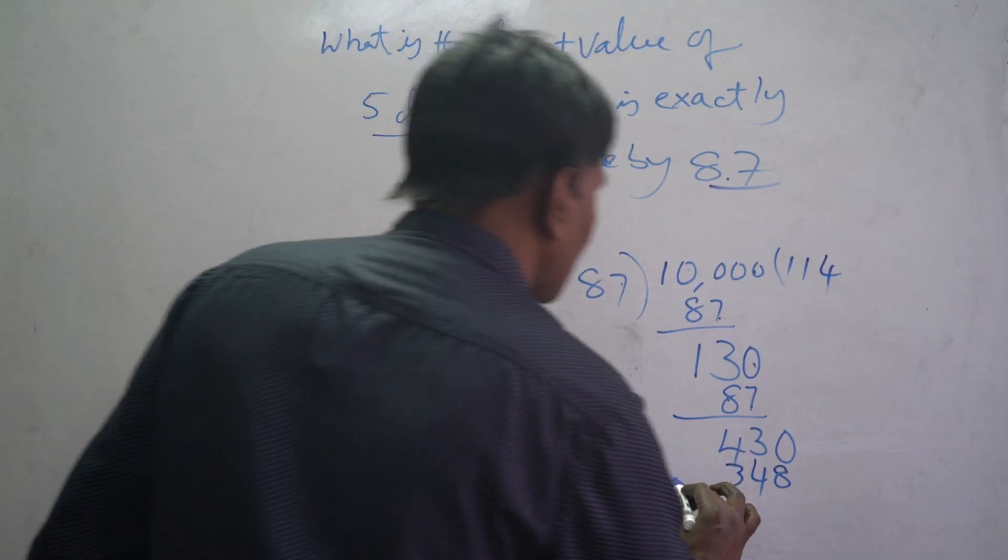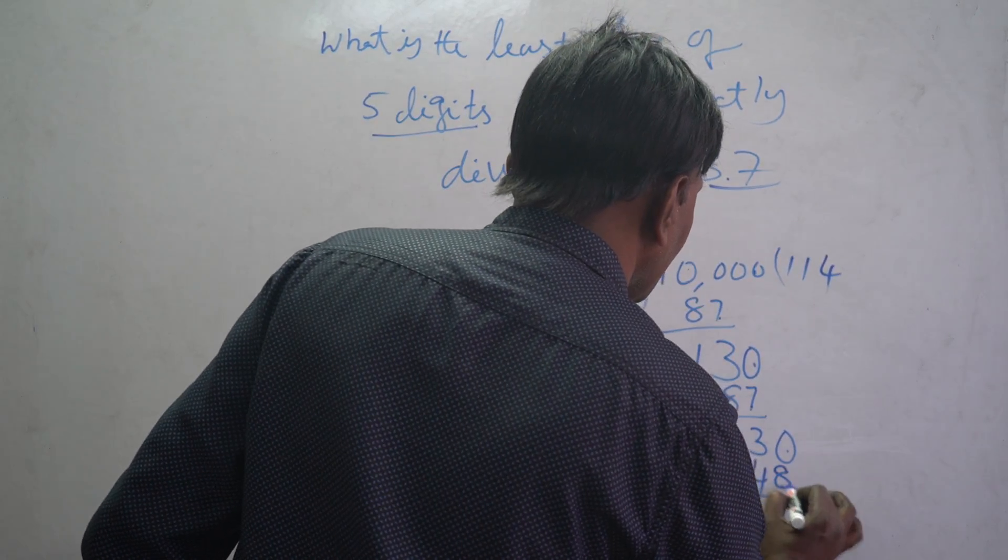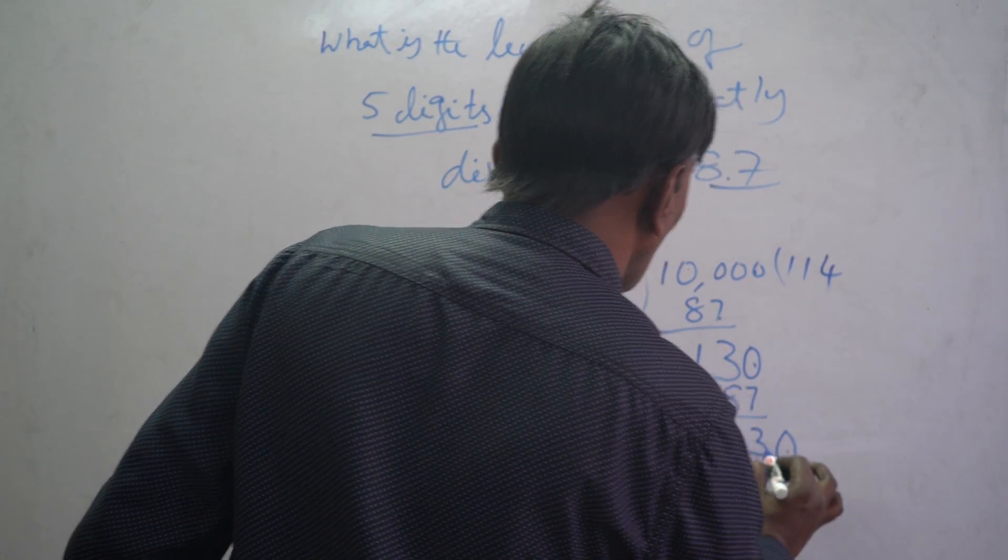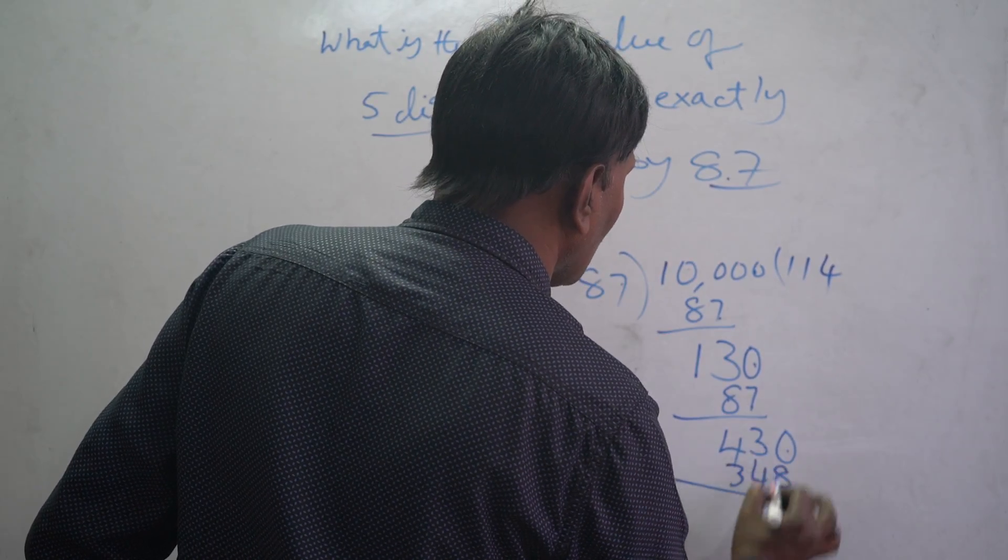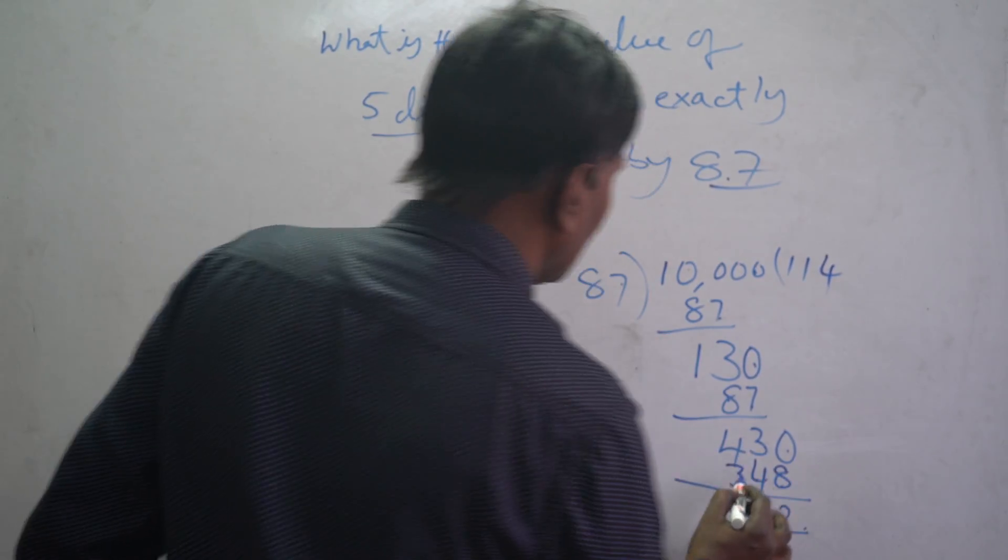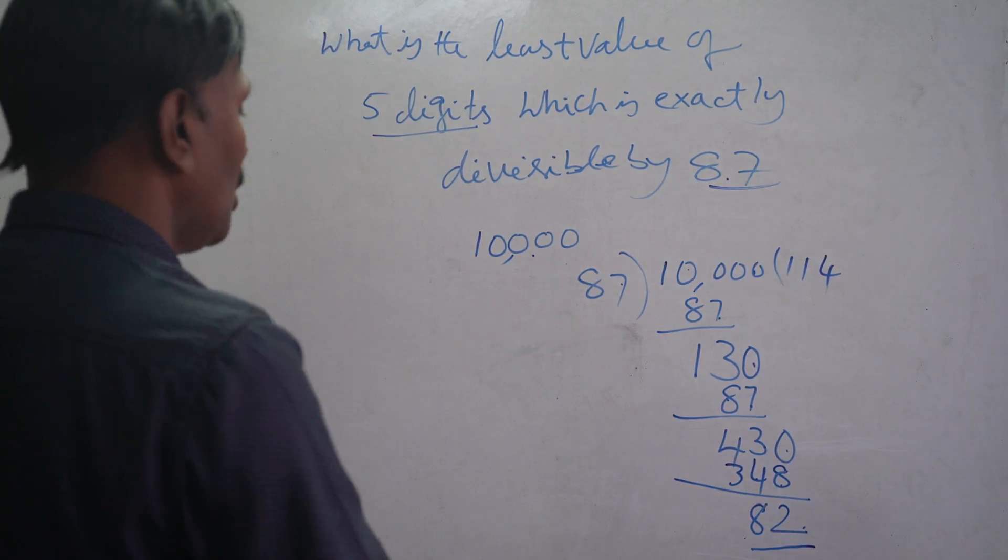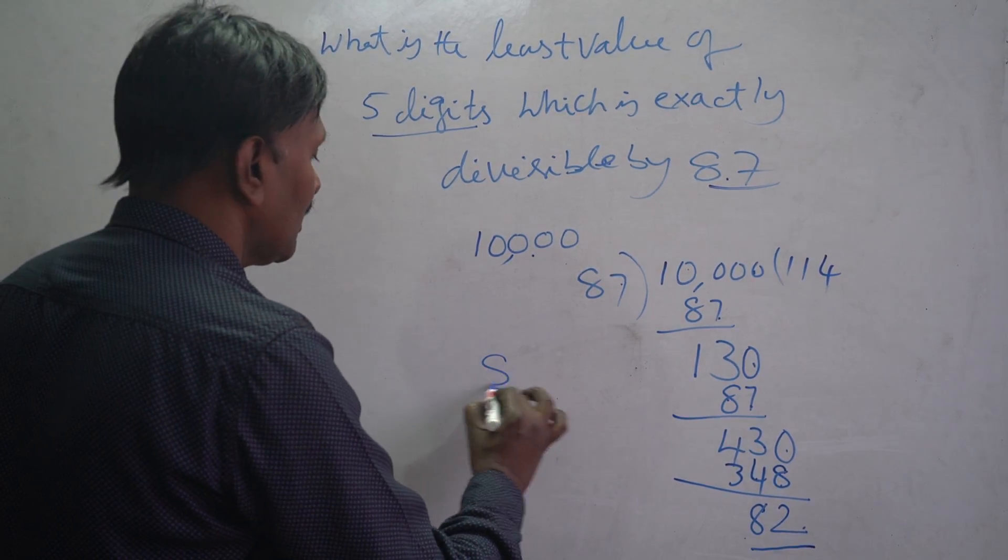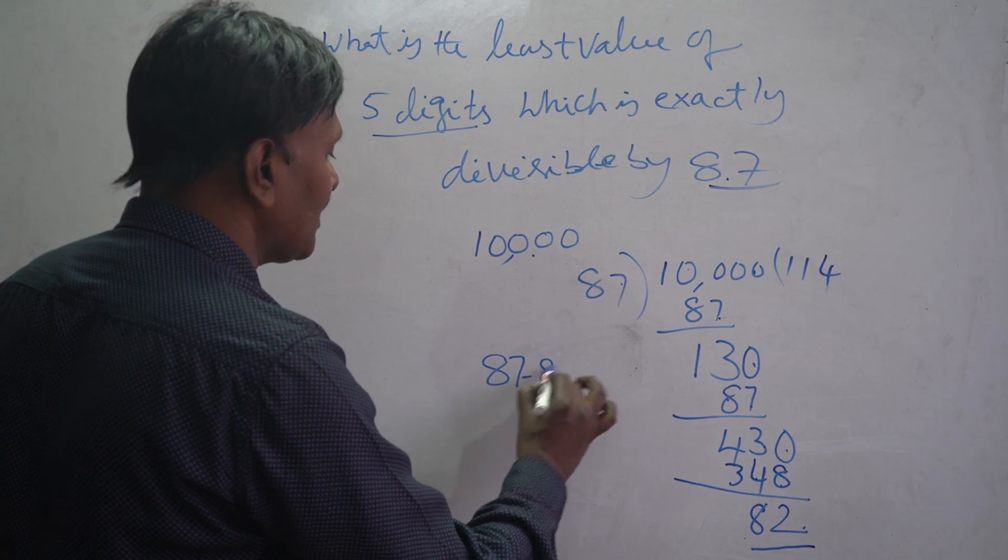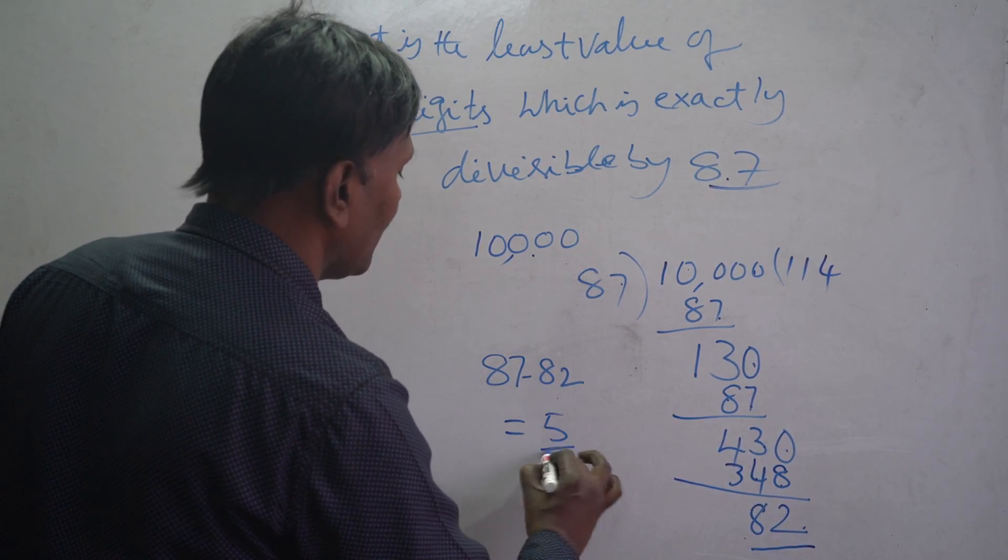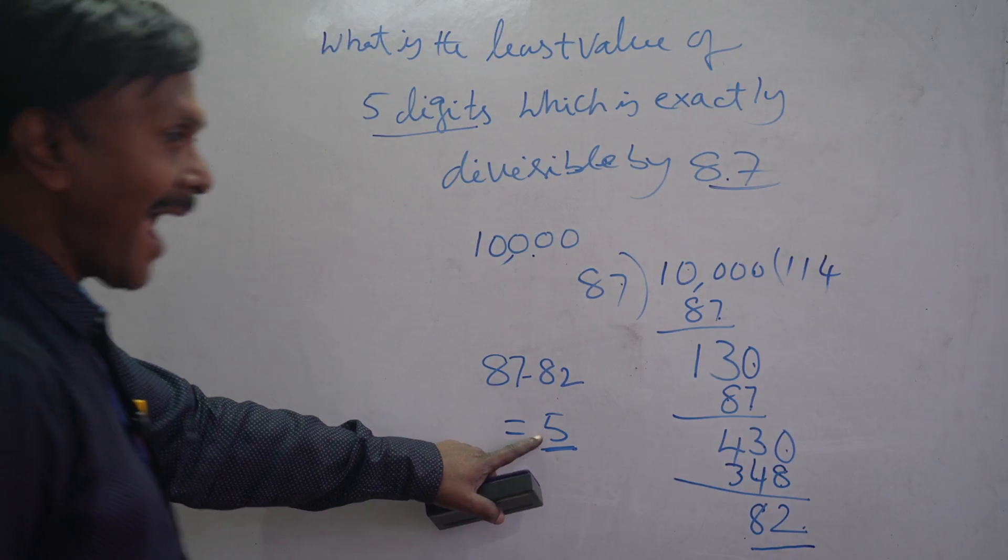Bring down zero. The remainder is 82. So 87 minus 82 is equal to 5.